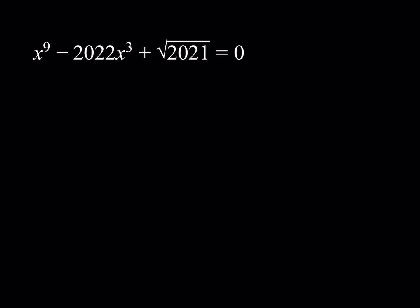Hello everyone. In this video we're going to be solving a very radical equation — a non-equation with the 9th degree. If you like this video, please comment, like, and subscribe, and don't forget to hit the bell button for notifications. Let's get started. So we do have this equation: x to the power 9 minus 2022 times x to the 3rd plus the square root of 2021 is equal to 0, and we're supposed to solve for x.